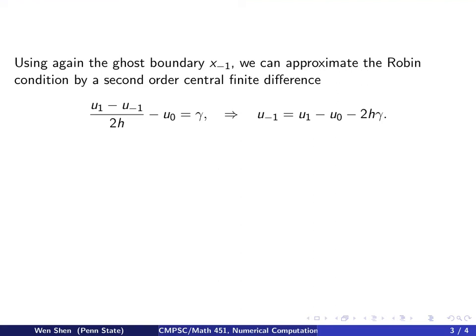We can use again the ghost boundary x minus 1, and we can approximate the Robin condition, especially the term with the derivative, by a second order central finite difference. So this is what we will have: the first derivative plus the non-derivative function term.